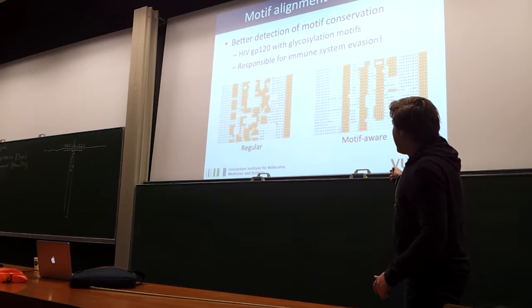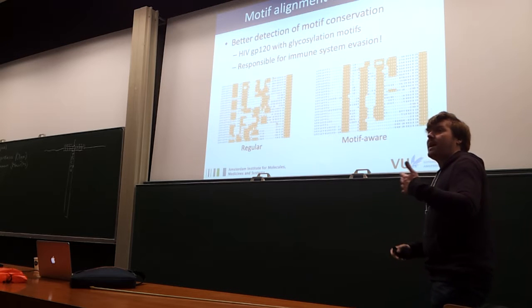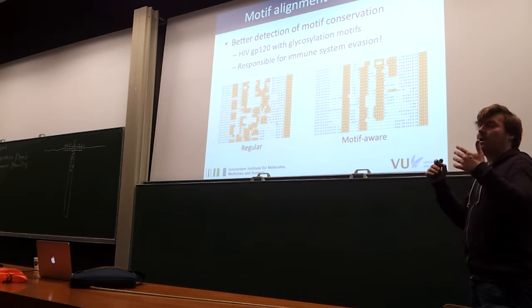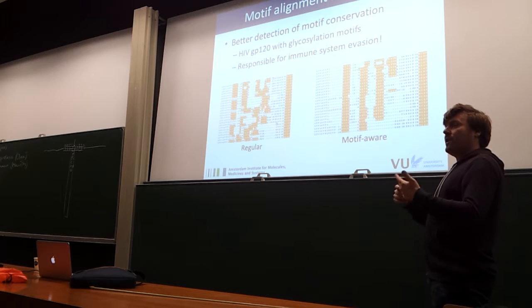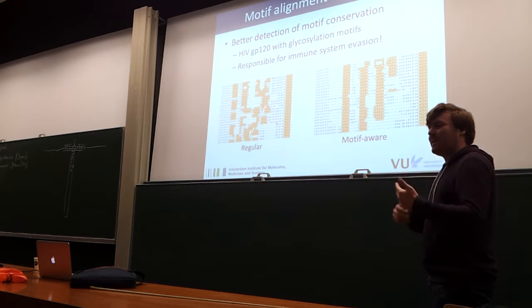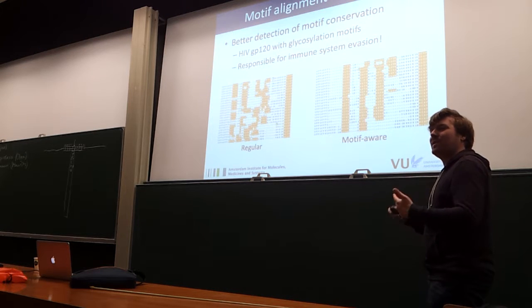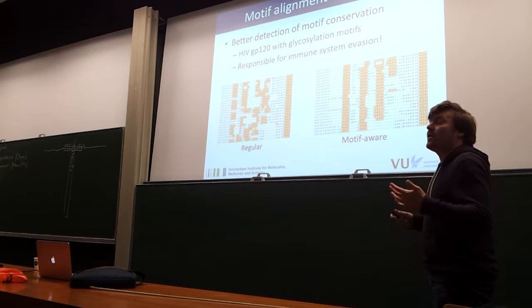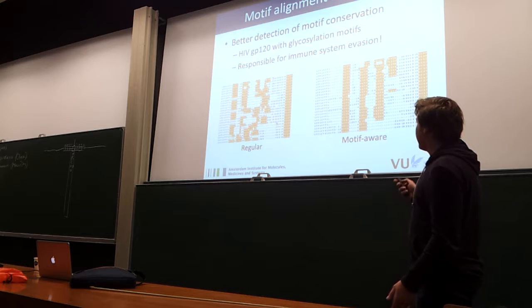By measuring the alignment, you can basically say: if I look at this protein in positions 100 to 104, there is always a glycosylation motif here. So this is probably an important place for the virus, because if it weren't conserved, the virus wouldn't need it to evade the immune response.